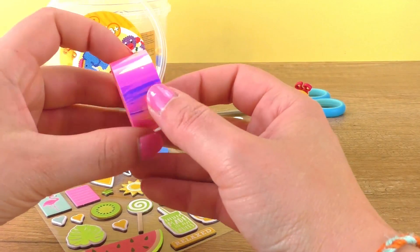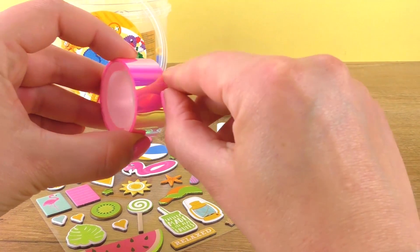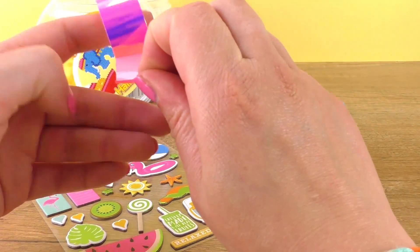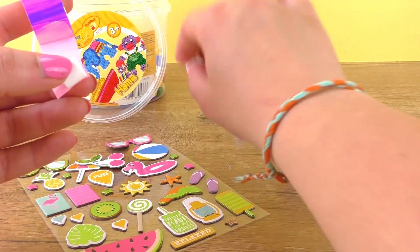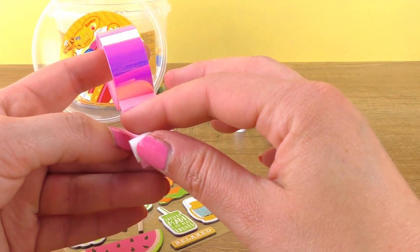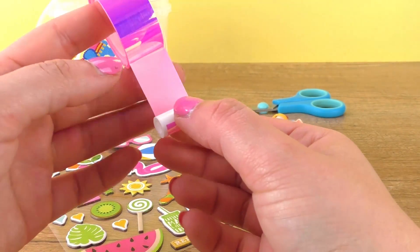So I'm going to start with this decorative tape and cover the iron-on beads with this pink tape. Let's see if two will fit right.